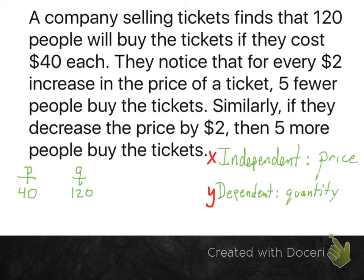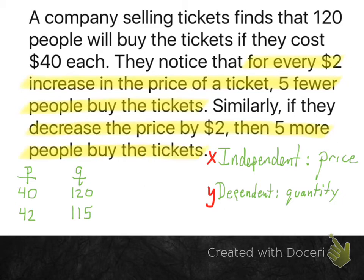The first piece of information tells us that at $40 a ticket, you sell 120 tickets — so price is 40 and quantity is 120. Then it tells us what happens when you change the price: if you increase the price by two dollars, you decrease q, the number of tickets sold, by five.